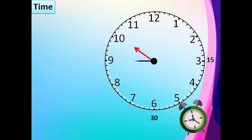When the long hand is at 9, it is 10:45 or quarter to 11. When the long hand is at 12, we say 60 minutes that is 11 o'clock.